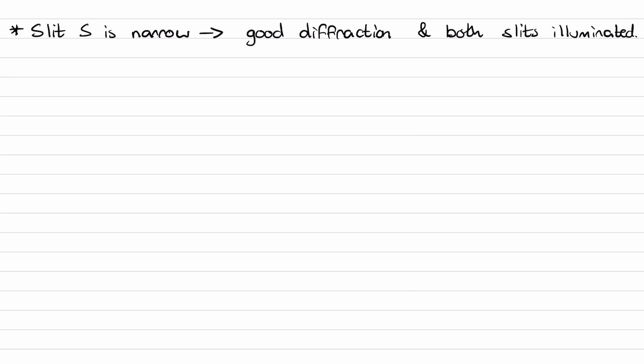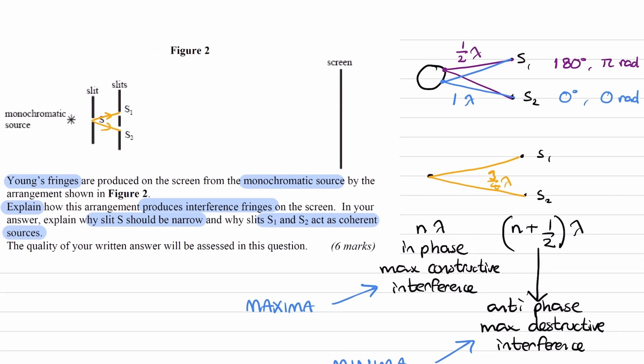One additional point: the narrower the slit, the more diffraction you get. Diffraction is maximised when the slit width is approximately equal to the wavelength. So if the initial slit S is approximately the same size as the wavelength of the monochromatic source, good diffraction occurs and the light will illuminate both slits S1 and S2 effectively.